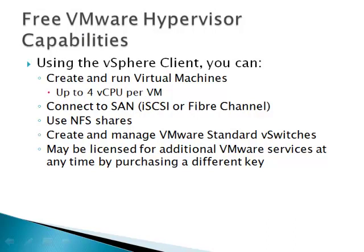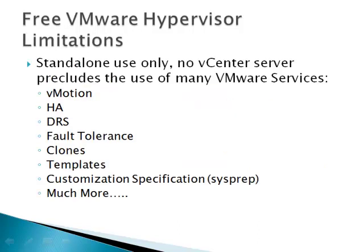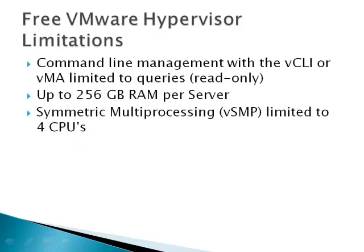With the free VMware Hypervisor, using the vSphere client you can create and run virtual machines, connect to a SAN, use NFS shares, create and manage VMware standard vSwitches, and increase your license entitlement at any time by purchasing from an authorized reseller like VMsources. Some limitations of the free VMware Hypervisor include that it's entitled for standalone use only — you can't connect to a vCenter server, which precludes use of vMotion, HA, DRS, fault tolerance, clones, templates, sysprep, and much more. While you can connect with remote CLI tools like the VCLI or VMA, your queries will be limited to read-only.